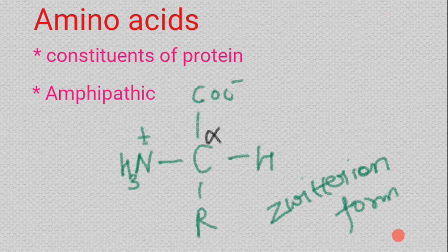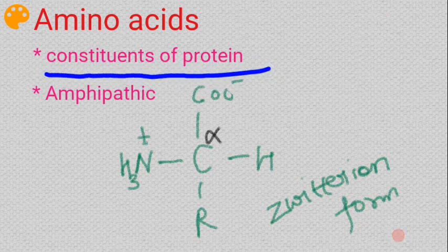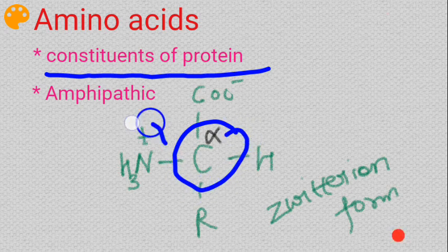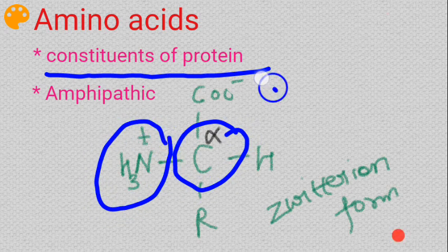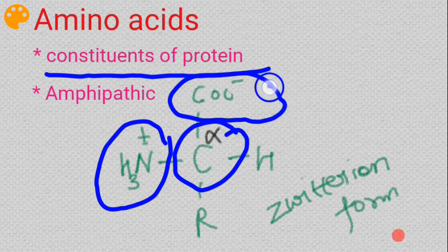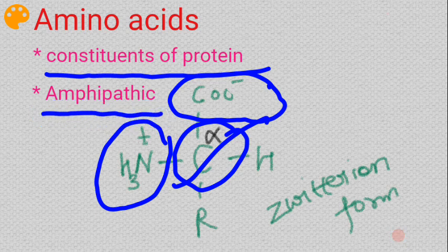First of all, I would like to start my lecture with the introduction of amino acids. Amino acids are the constituents of protein; they are also known as the building blocks of protein biomolecules. Amino acids contain one alpha carbon atom, one amino group, and one carboxylic acid group attached to the alpha carbon atom.